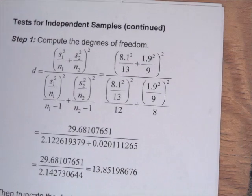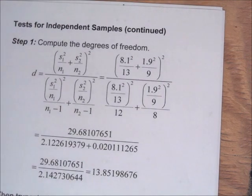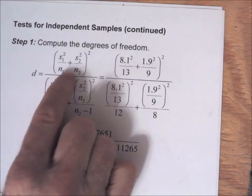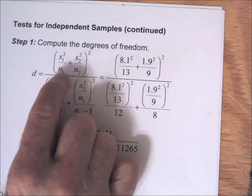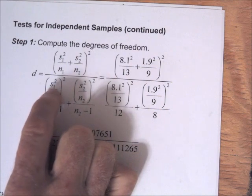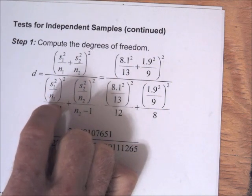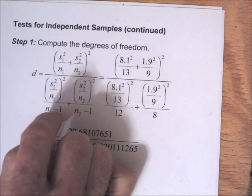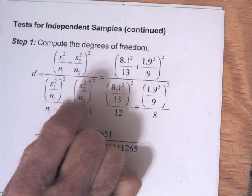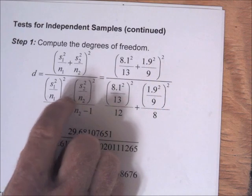There's a somewhat complicated formula for using the T table. The more precise way is to use this formula to find the row of the T table. The numerator is S1 squared divided by N1 plus S2 squared divided by N2, all squared. The denominator is (S1 squared over N1) squared divided by (N1 minus 1), plus (S2 squared over N2) squared divided by (N2 minus 1), and then we add those two numbers.